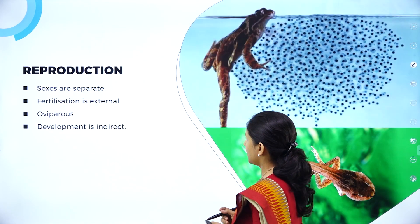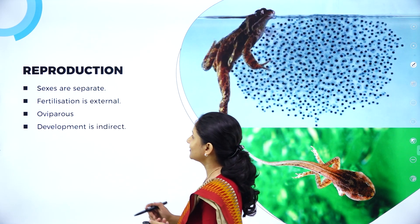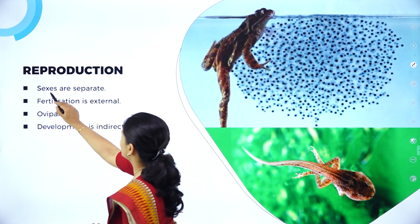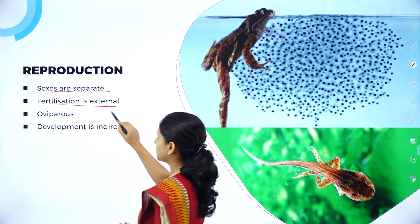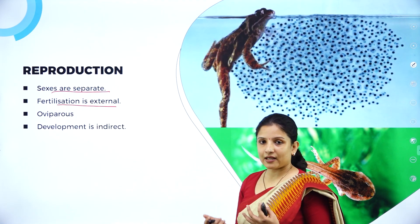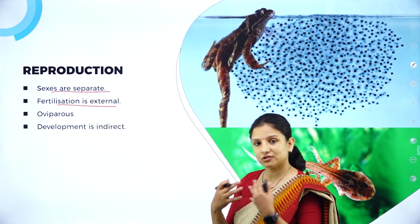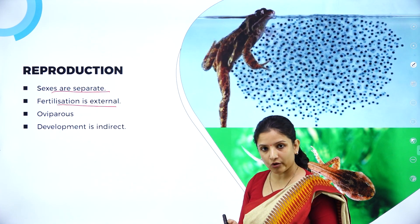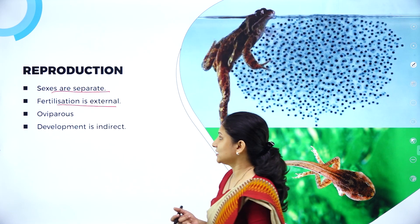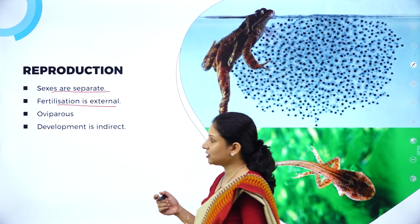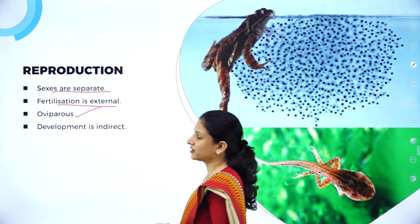The heart is three-chambered, wherein it has two auricles and one ventricle. Talking about reproduction, they are dioecious wherein the sexes are separate and fertilization is external — they lay the egg and the sperm meets the egg outside the body in the water. The egg hatches after fertilization, so fertilization is external. They are usually egg-laying; therefore, they are oviparous.